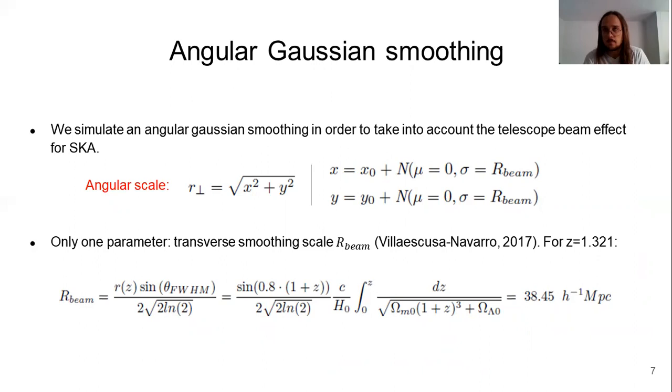which is the only parameter that we will consider for this effect. Our beam will be larger if we observe farther, and a larger value of this parameter implies a more strong effect. In particular, for redshift 1.3, we have this value of 38 megaparsecs approximately.